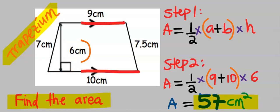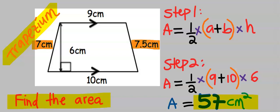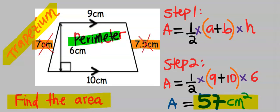The exclusion of 7 cm and 7.5 cm does not have any effect on our results. In the calculation of the area of a trapezium, the non-parallel sides are not required, except for the perimeter.